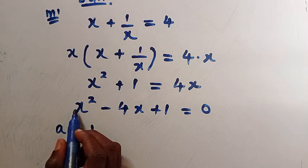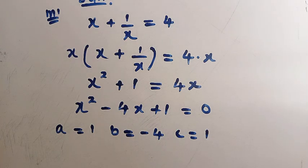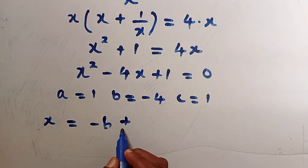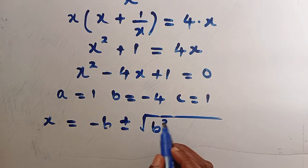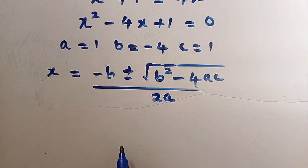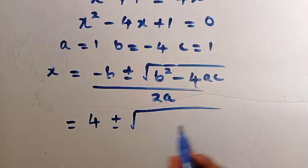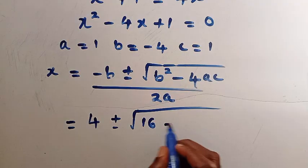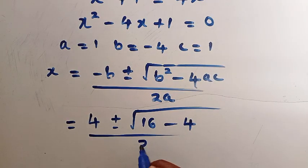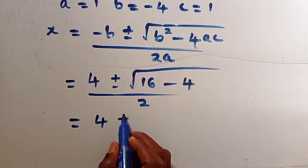We look for the value of x in this quadratic equation. The coefficient a equals 1 (coefficient of x squared), b equals minus 4 (coefficient of x), and c equals 1. Applying the general quadratic formula: x equals minus b plus or minus the square root of b squared minus 4ac, divided by 2a. Substituting: minus b is plus 4, plus or minus square root of (minus 4 squared, that is 16, minus 4 times 1 times 1, that is 4), divided by 2 times 1, which is 2.